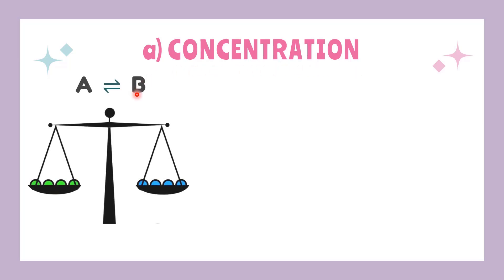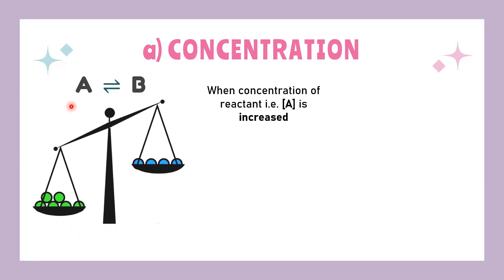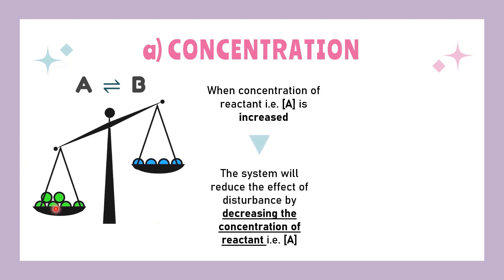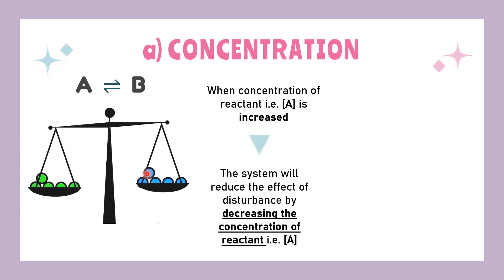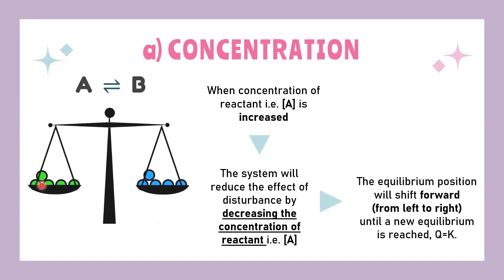First, we could modify the concentrations of any of the compounds, be it on the reactant side or product side. Say we have A as our reactant and B as our product. Adding some of the reactant means concentrations of A is increased, so the system will reduce the effect of disturbance by decreasing the concentrations of A. The equilibrium positions will shift forward from left to right until a new equilibrium is reached, where concentrations of A decrease and concentrations of B increase.